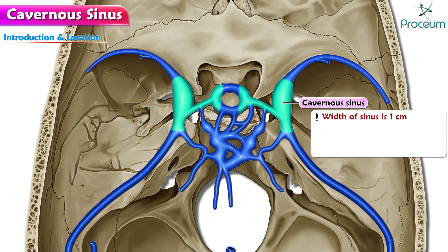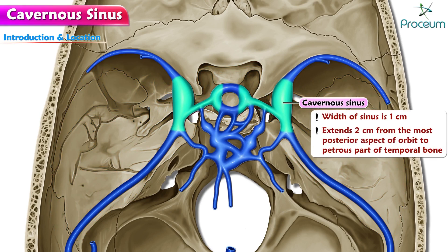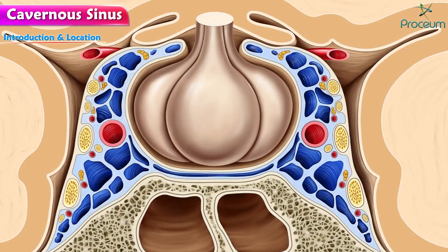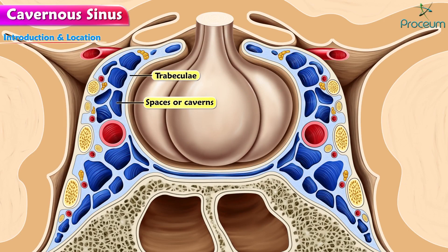The width of the sinus is 1 cm and extends 2 cm from the most posterior aspect of the orbit to the petrous part of the temporal bone. Each opens behind into the petrosal sinuses. The interior of the sinus is divided into several small spaces, or caverns, by means of trabeculae. Therefore, it is named the cavernous sinus.